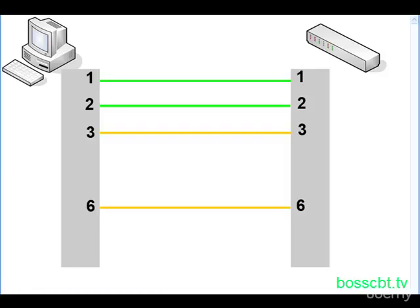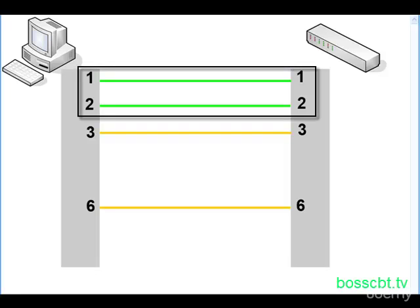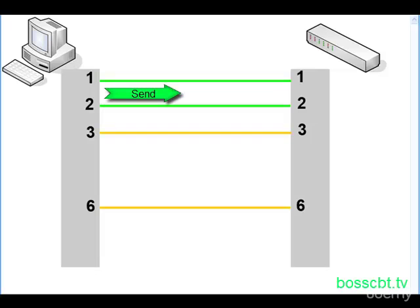So why does this work? Well, pair 3, which is pins 1 and 2, the green ones, are used by a PC's NIC to send frames. And that works out well because the switch is set up to receive frames on that same pair. So the PC sends, the switch receives. It really works out well. Very simple.